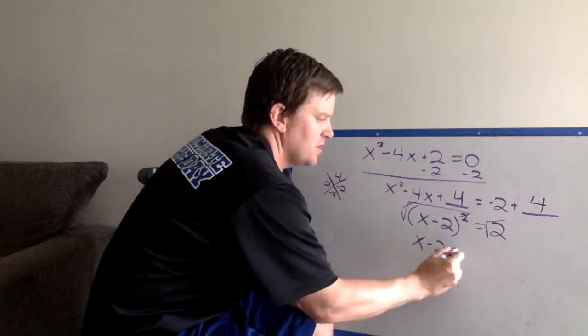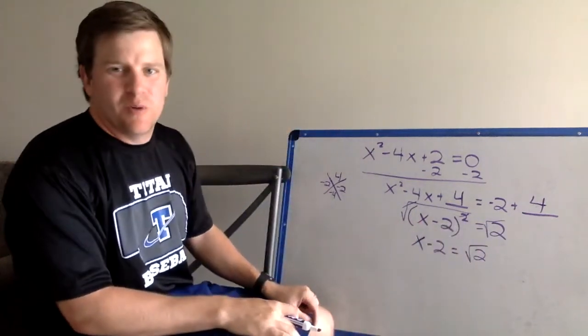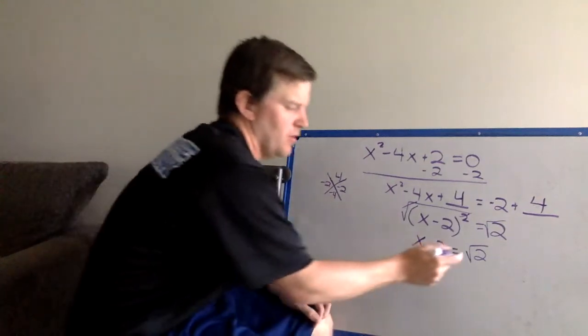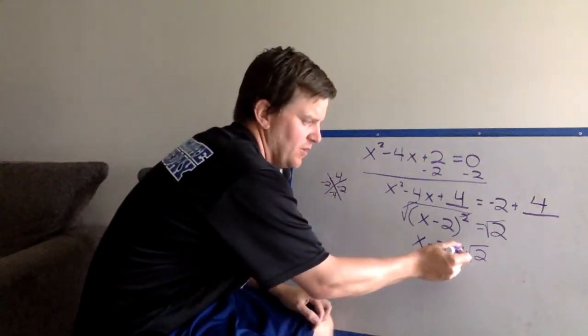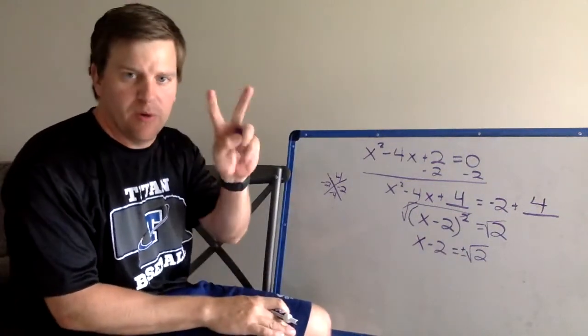So we have x minus 2 equals the square root of 2. We don't know the square root of 2, right? It's a decimal. But remember, let's leave it as a radical, and let's put our plus and minus out front because it's the square root of a positive number. So we know we're going to get two answers.